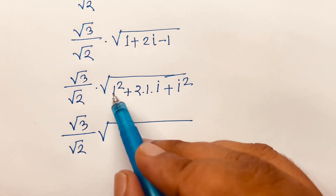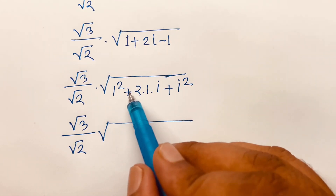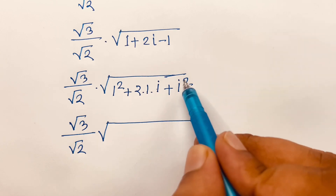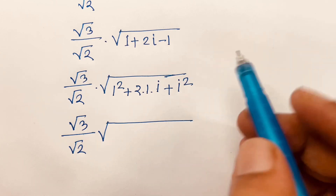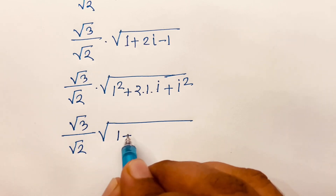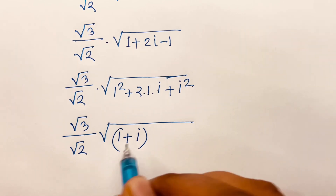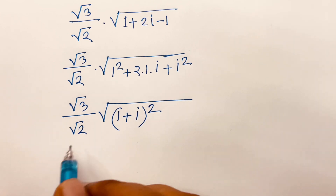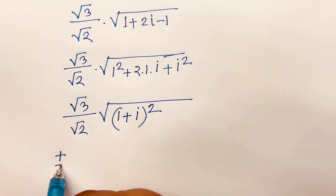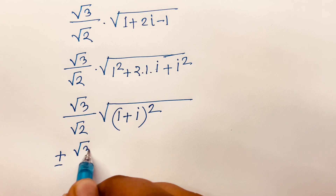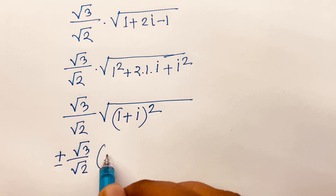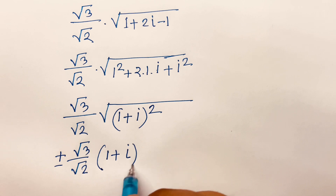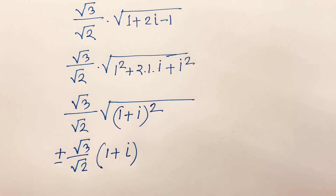So here is square root 3 over square root 2. If you think it as a and b, then a squared plus 2ab plus b squared equals (a plus b) whole squared. According to this rule, it will be (1 plus i) bracket power 2. Then the square root is cancelled, so we find plus or minus square root 3 over square root 2 times (1 plus i). This is our final answer. Now I will solve this question using another method. Our question is square root of 3i.